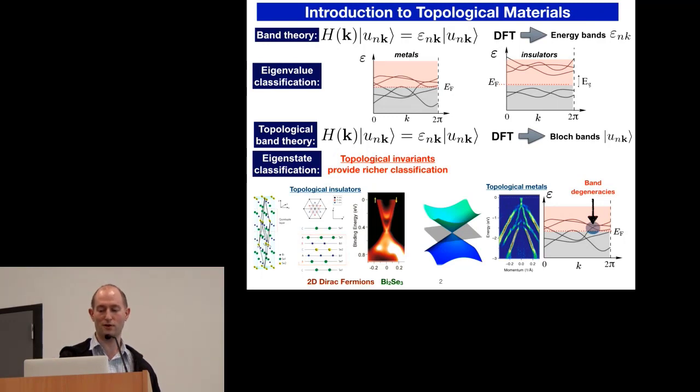Now with topological band theory, the main difference is that we concentrate our attention more on the eigenstates of the Hamiltonian. From these eigenstates we can derive a special type of quantum number called the topological invariant. Once we have the topological invariant, we can stay with the materials that we consider are classified further.